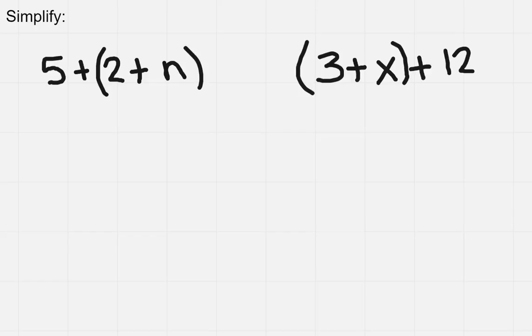So if I look at the first one, I've got 5 plus parentheses 2 plus n. And so what I want to do is I want to actually group the numbers together. So I would rewrite this as 5 plus 2 in parentheses plus n.